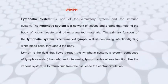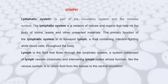Now next is lymph. Before understanding what lymph is, it is important to understand the lymphatic system. The lymphatic system is a part of the circulatory system and the immune system. It is a network of tissues and organs that help rid the body of toxins, waste, and other unwanted materials. The primary function of the lymphatic system is to transport lymph — a fluid containing infection-fighting white blood cells — throughout the body. Lymph flows through lymph vessels and intervening lymph nodes, returning fluid from the tissues to central circulation.